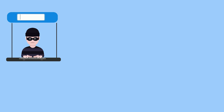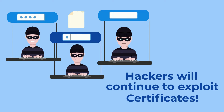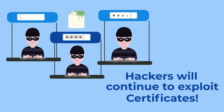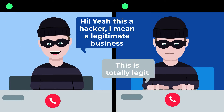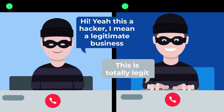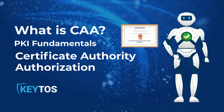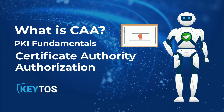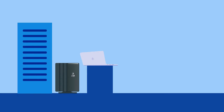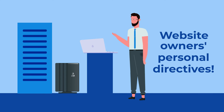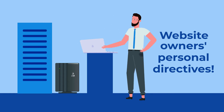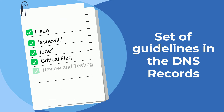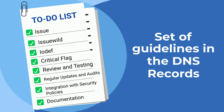Unless action is taken, cybercriminals will continue to exploit this vulnerability to falsely pose as businesses in very convincing fashion. This is where CAA, or Certificate Authority Authorization, comes into play. Think of CAA as a website owner's personal directives — a set of guidelines laid down in the website's domain name system records.